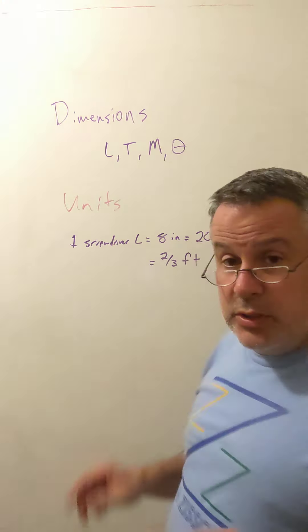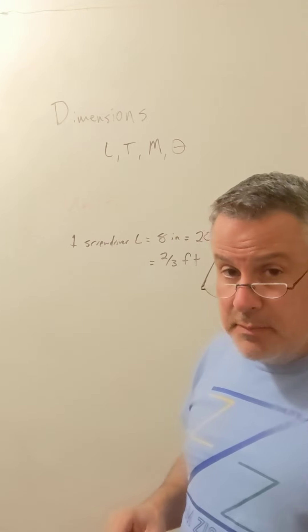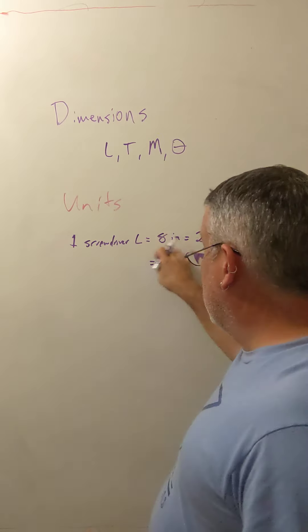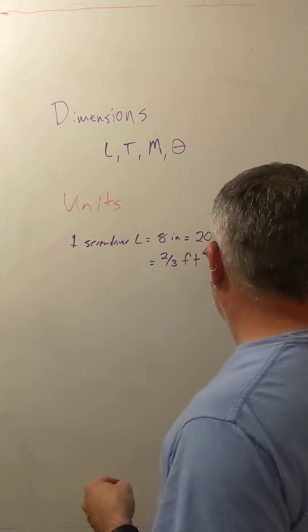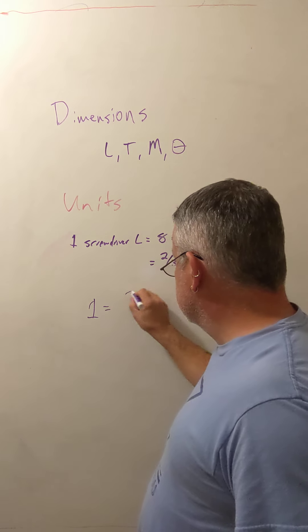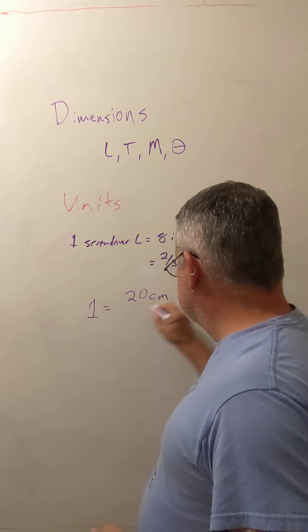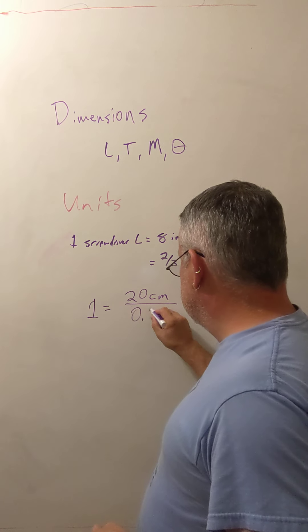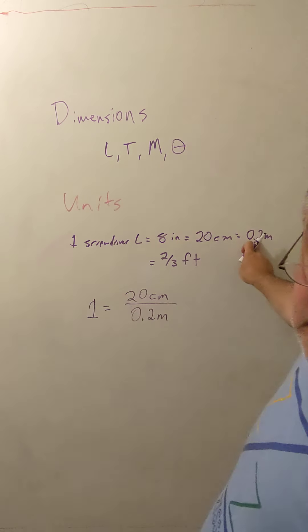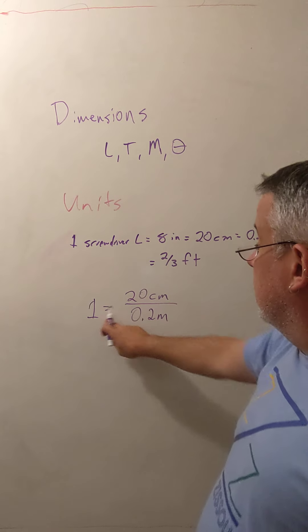There's one really special thing that you can do here, which makes it really easy to manipulate your units, which is you can take the ratio of an equation like this and say 1 equals 20 centimeters over 0.2 meters, for example. Or I've just taken these two on this part of the equation and divided one by the other to get 1 equals this.